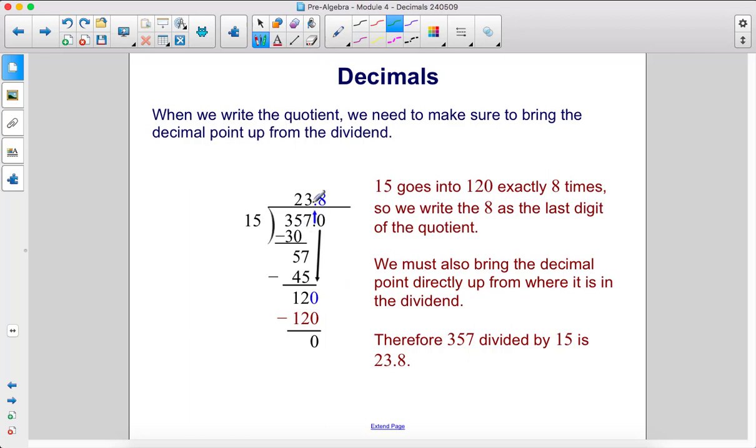We must also bring up the decimal point directly up from where it is in the dividend. Therefore, 357 divided by 15 is 23.8.